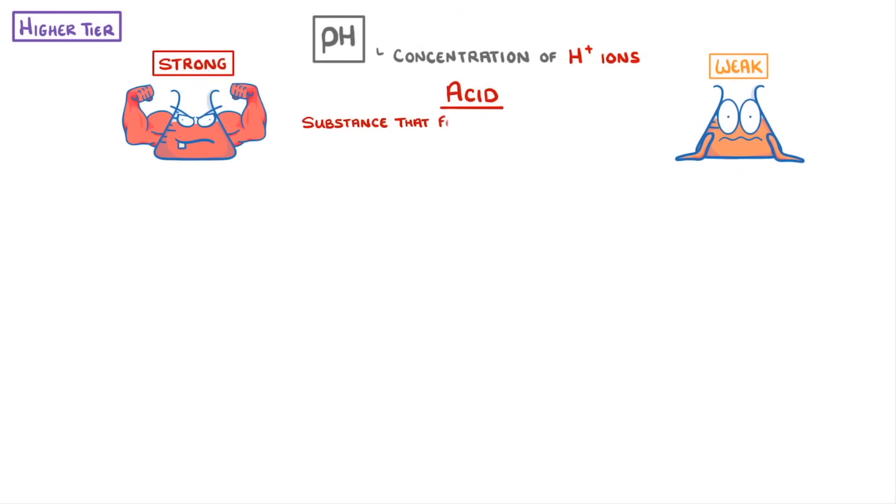An acid is a substance that forms aqueous solutions with a pH of less than 7. The reason for this is that they ionise in aqueous solutions to release hydrogen ions, which just means they split or dissociate into their ions.